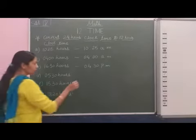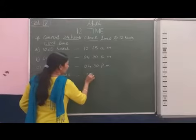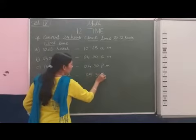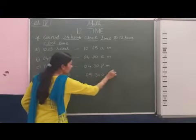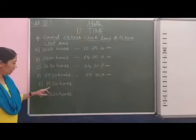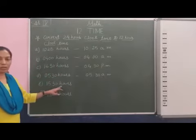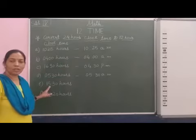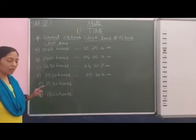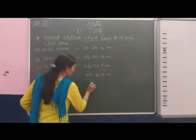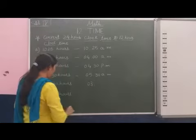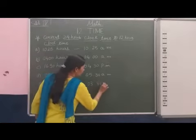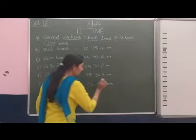Here 5:30 hours, so 5 hours 30 minutes AM, morning time. And here 15:30 hours, so 15 minus 12 equals 3. Here we write the time as 3 hours 30 minutes, but it shows post-meridian time, that's afternoon time.